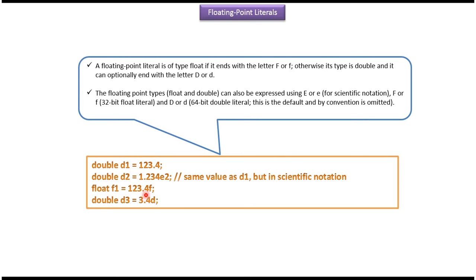This one is a floating point literal of type float because it ends with F. And this one is a floating point literal of type double because it ends with D. These others are floating point literal type of double because they do not end with F.